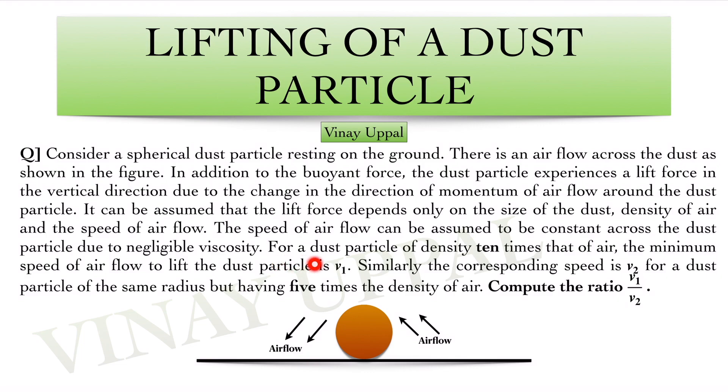So what is the question asking? For a dust particle of density 10 times that of air, the minimum speed of airflow to lift the dust particle is V1. Similarly, the corresponding speed is V2 for a dust particle of the same radius but having 5 times the density of air, and we want to compute the ratio of V1 to V2.